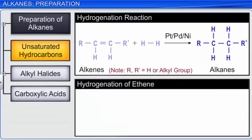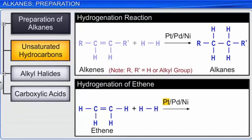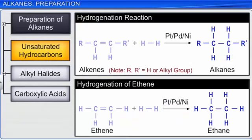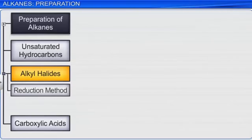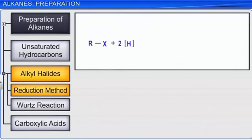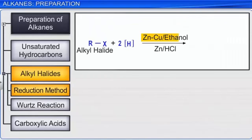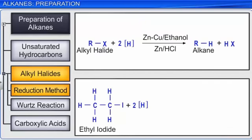However, the reaction using nickel as a catalyst requires relatively higher temperature and pressure. For example, ethene on hydrogenation in the presence of finely divided platinum, palladium, or nickel gives ethane. To obtain alkanes from alkyl halides, we can either use the reduction method or the Wurtz reaction. Alkyl halides on reduction with reducing agents such as zinc-copper couple in ethanol, or zinc and dilute HCl, give alkanes. For example, ethyl iodide when reduced gives ethane.